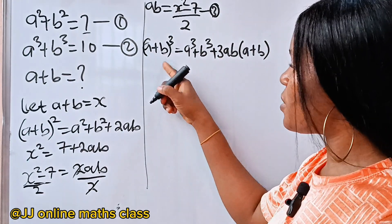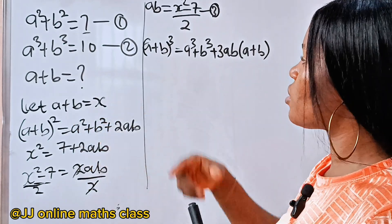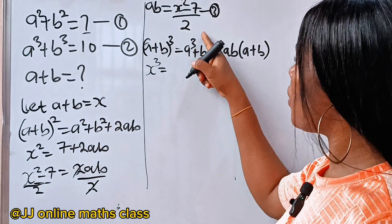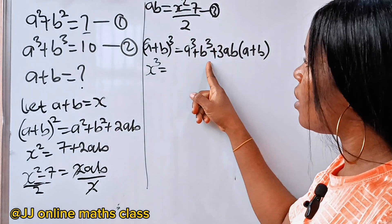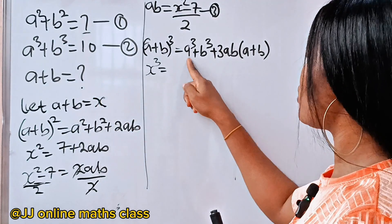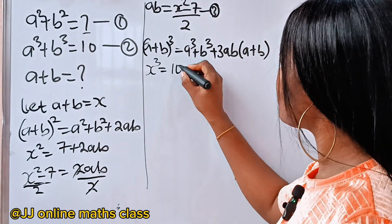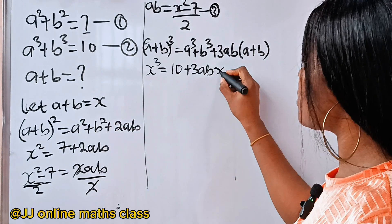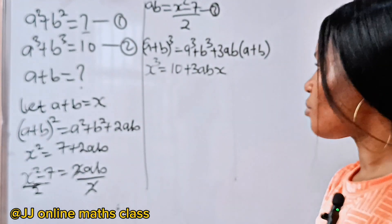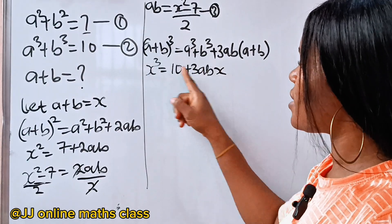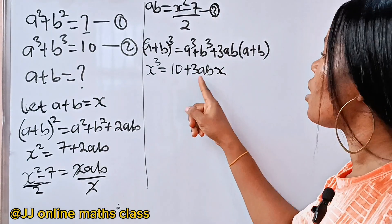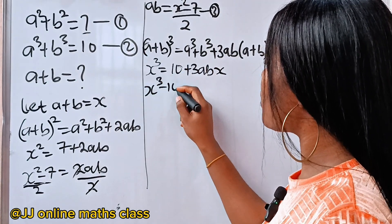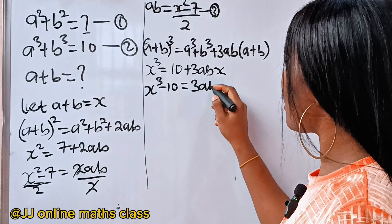Since a plus b is x, we write x to the power of 3 equals a cubed plus b cubed, which is 10, plus 3ab times a plus b, which is x. Now let's transfer the plus 10 to the other side. So we have x to the power of 3 minus 10 is equal to 3abx.